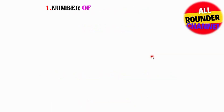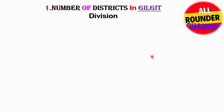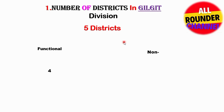We will go through divisions in sequence. Starting with Gilgit Division: there are five districts in Gilgit Division. Out of these five, four districts are functional and only one district is non-functional.